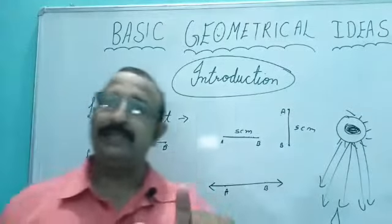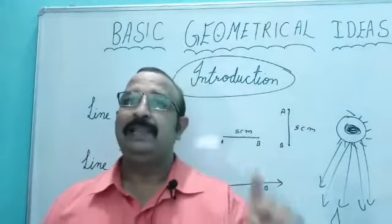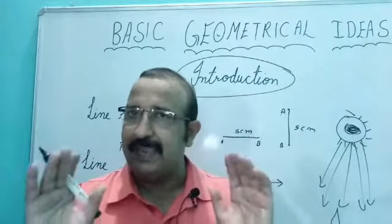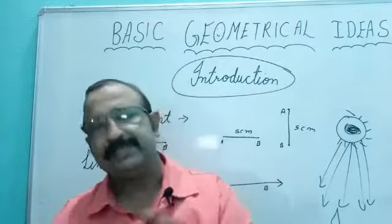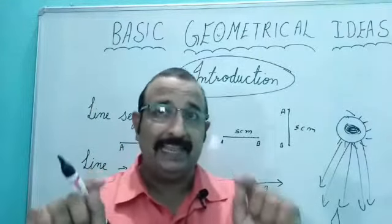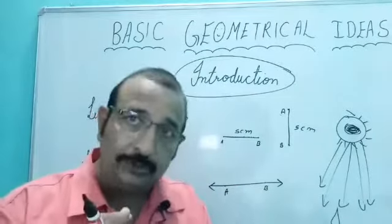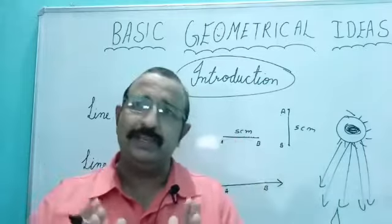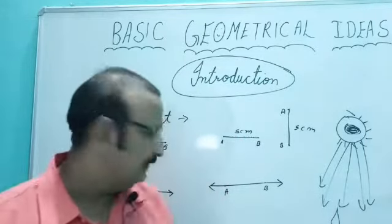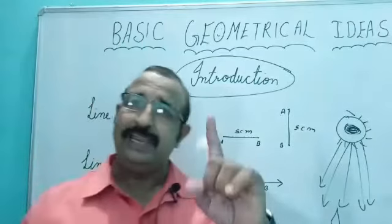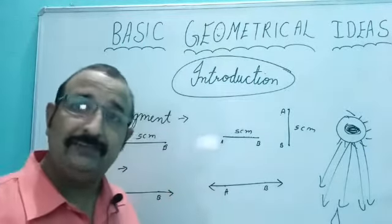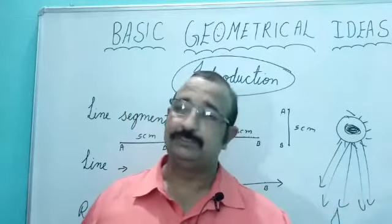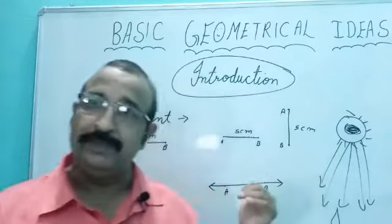So we studied these three things. Let's revise once more. Understand it well. Line segment has two definite end points. It can neither be increased nor decreased - fixed length. That is a line segment. Line - which can be infinitely extended as much as you want. It doesn't have fixed points, it doesn't have any limit. It can be extended in every direction. And third is ray, which can be extended from one side only. One side is fixed, one side can be extended. As I gave examples - candle, sunlights, and torch.